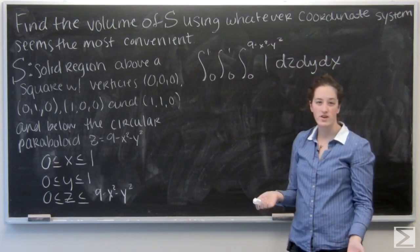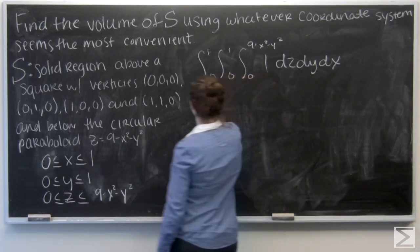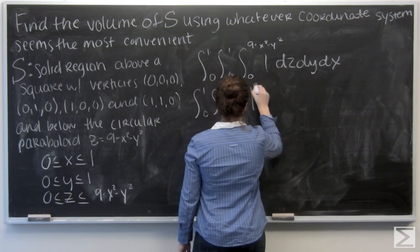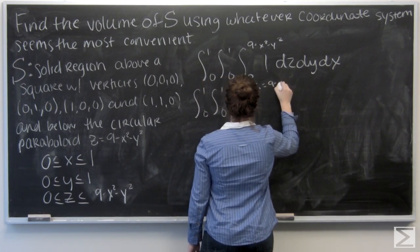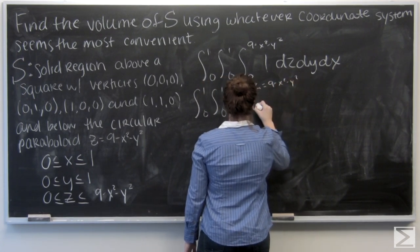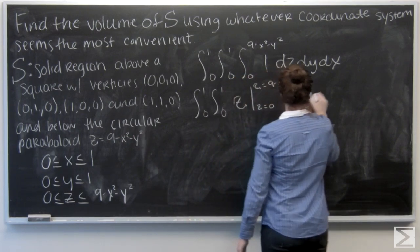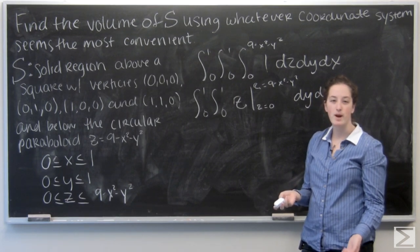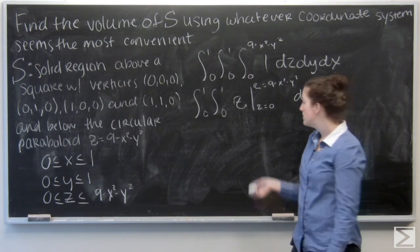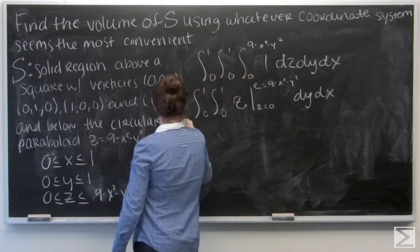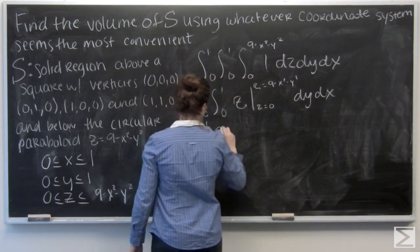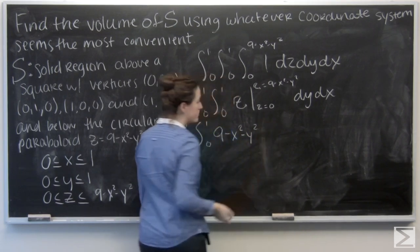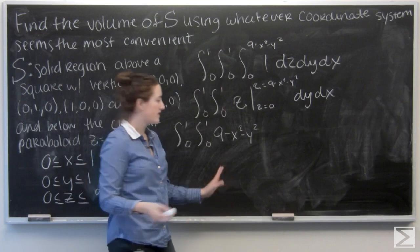1 integrated with respect to z is just z. I'm evaluating z from 0 to 9 - x² - y². I'll plug in that first function, and then for z = 0, I'm just subtracting 0, so there's nothing else there.